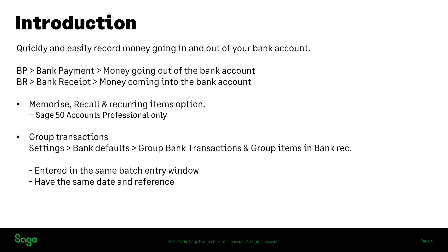You can also group bank transactions to make it easier to analyze and reconcile them. You can group transactions within the bank activity and bank reconciliation window. Go to Settings along the top, into Bank Defaults, and you'll see two checkboxes: one for group bank transactions and one for group items within bank rec. This is not a retrospective change — transactions posted before the checkbox was enabled will not be grouped. Equally, clearing the box does not ungroup existing transactions. Grouped transactions must be entered in the same batch entry window with the same date and reference.